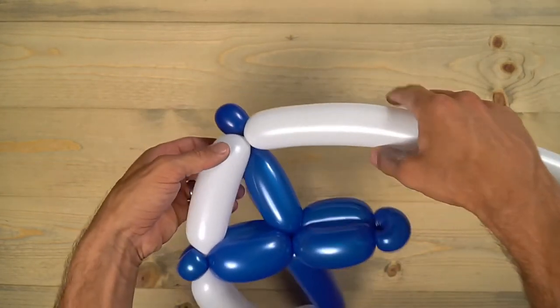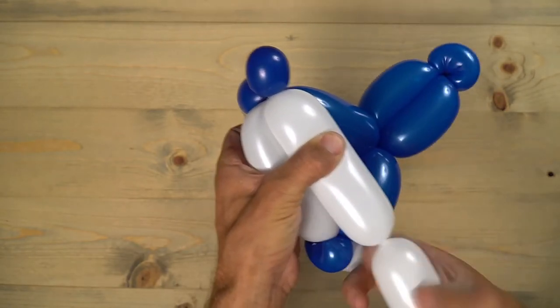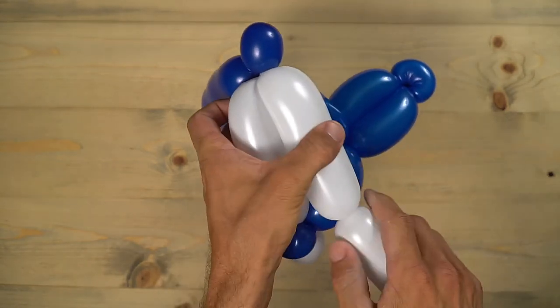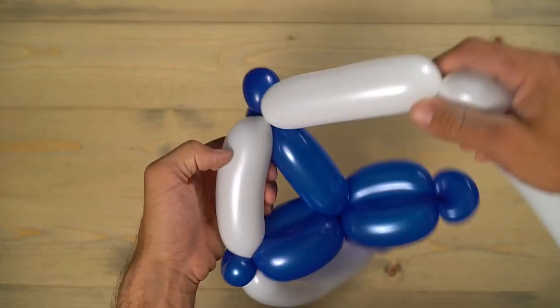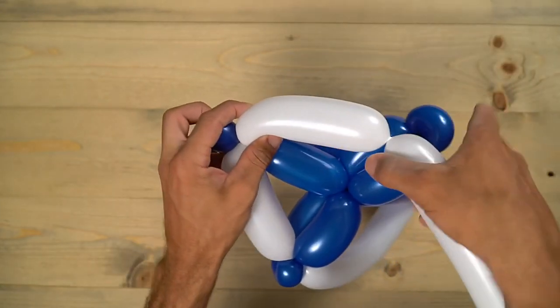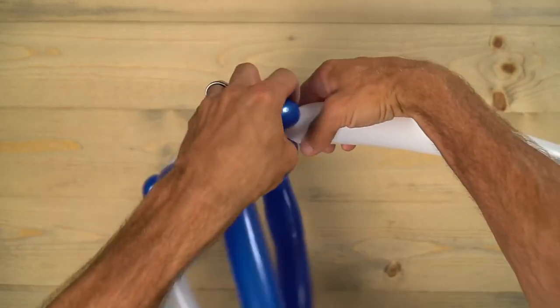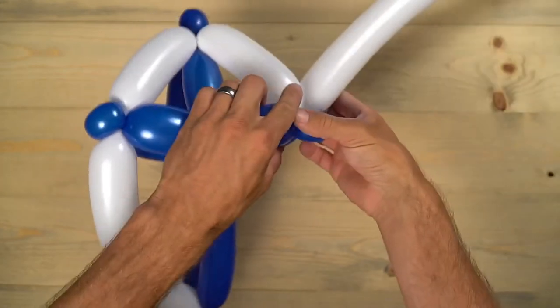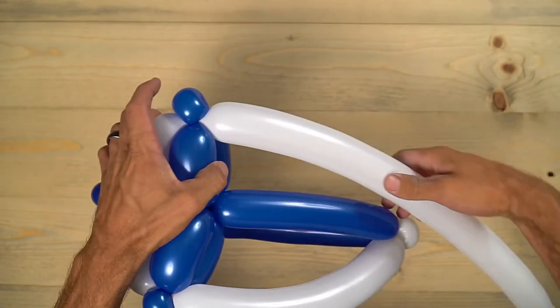So make the next one the same size as the one you just made. So I like to match it up next to each other. Twist right there. And then I'll bring that over on the other side. And then lock it into that pinch twist.